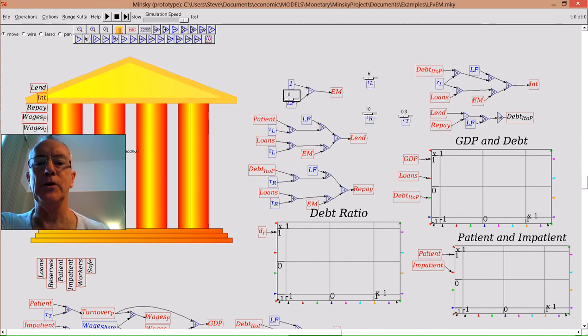changed over from loanable funds, which changes things. I no longer have lending and repayment changing the debt of the impatient agent to the patient agent. Let's run this model and you'll see